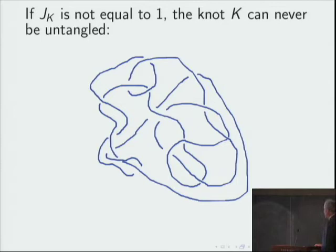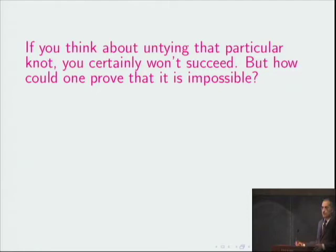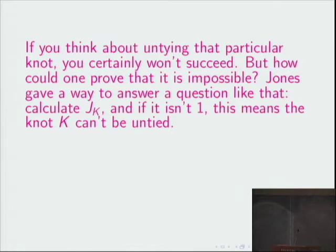Now if we take this knot here, you could think about trying to unravel it, and you probably won't make much progress. But how could you prove that that particular messy, tangled loop of string cannot be unknotted, cannot be turned into a simple circle that isn't tangled up? Well, Jones gave a way to answer a question like that. Calculate this number J attached to the knot, and if it isn't 1, it means the knot can't be untied. And more generally, if two knots have different numbers, then they're not equivalent to each other. You can't transform one into the other without cutting and tearing the string.